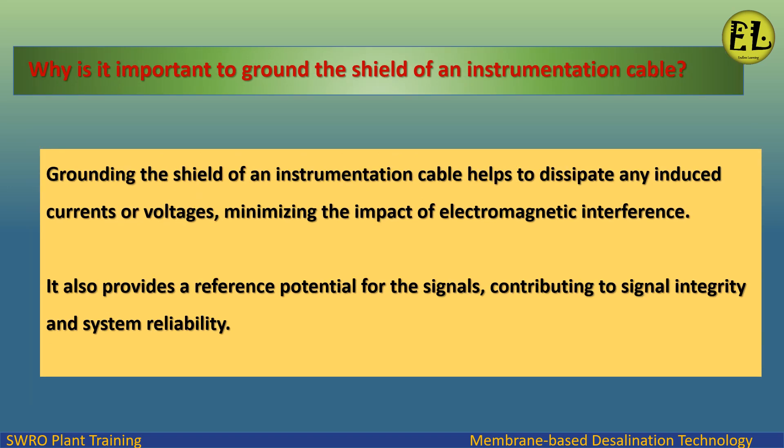Grounding the shield of an instrumentation cable helps to dissipate any induced currents or voltages, minimizing the impact of electromagnetic interference. It also provides a reference potential for the signals, contributing to signal integrity and system reliability.